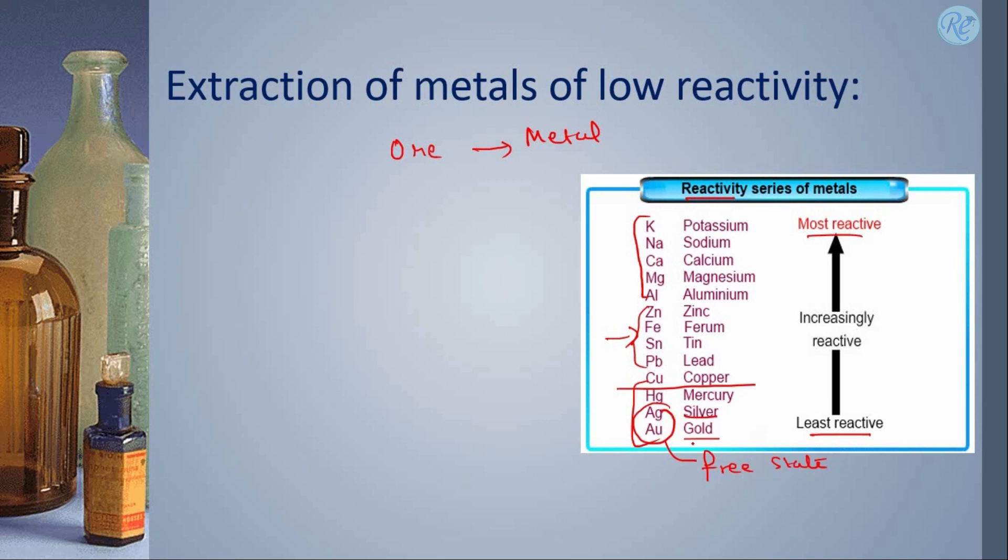Those which are least reactive, gold and silver, are present in free state. Since these are least reactive, they do not react and do not form any compound. They are found in their pure state as gold and silver, while other elements are present in combined state.